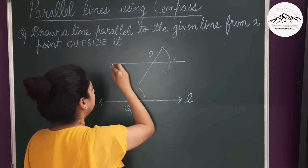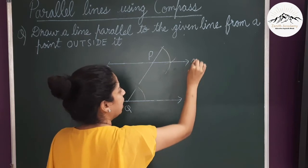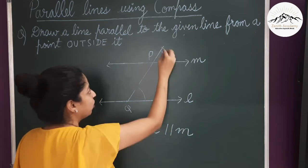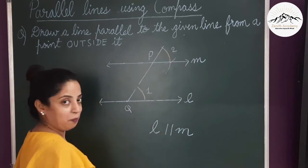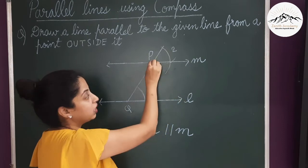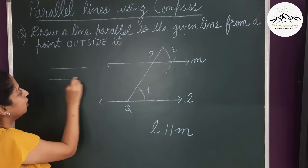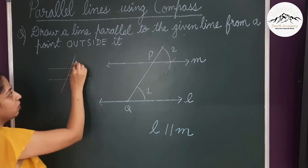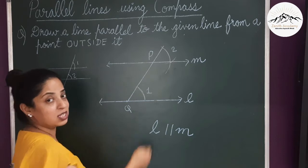I joined this point and point P to obtain another line. This is your line M, and you can say that L is parallel to M. Why? Because these two angles — angle 1 and angle 2 — are the same. Since we have constructed these two angles equal, therefore these two lines are parallel. This is how to draw a parallel line from a point outside the given line using the fact that corresponding angles are equal.